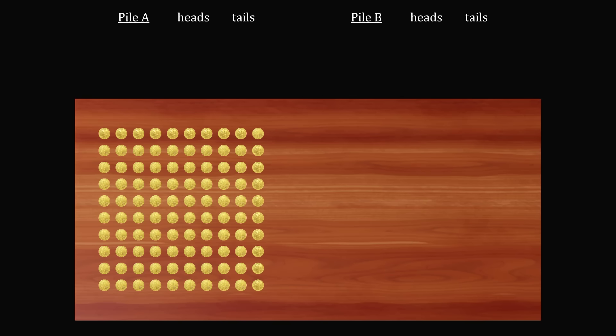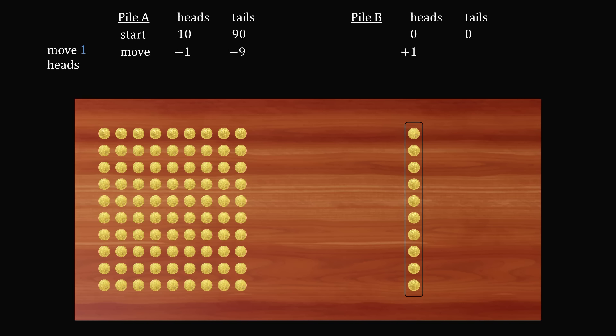So we go back to the beginning. Pile A starts out with 10 heads. Pile B will start out with zero of each. So now let's say that we grab 10 coins and we move it to the other side. So let's suppose that we have moved one coin that is showing heads and the other nine coins are showing tails. So this will be minus one for heads and minus nine for tails. And it'll be plus one and plus nine in pile B. So the result of this action will be nine heads and 81 tails on the left side. And it'll be one head and nine tails on the right hand side.